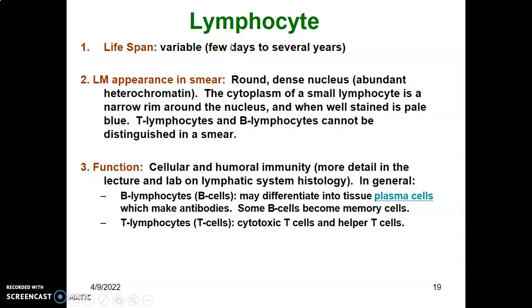Lymphocytes have a variable lifespan from a few days to several years. Under light microscopy they have a round, dense nucleus. The cytoplasm is small because the large nucleus pushes it to the periphery, leaving a narrow rim of cytoplasm around the large nucleus. T cells and B cells cannot be distinguished from each other under light microscopy in the blood smear.